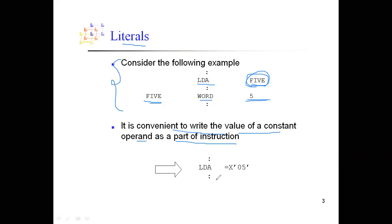Those two instructions can now be written as LDA =X'05', which is a literal. Whenever you see an equal sign, it means it's a literal, and the constant is directly defined as part of the instruction — that is, in the operand field.